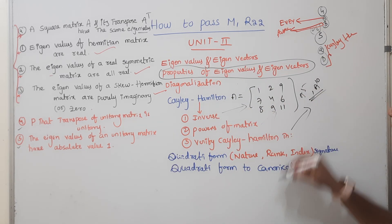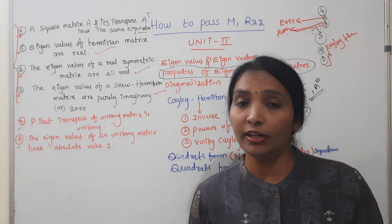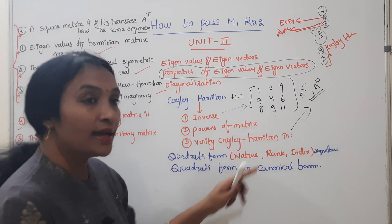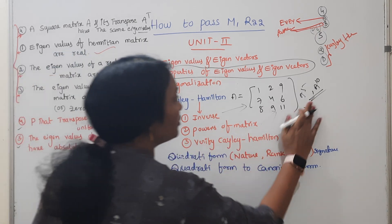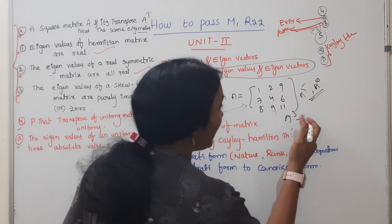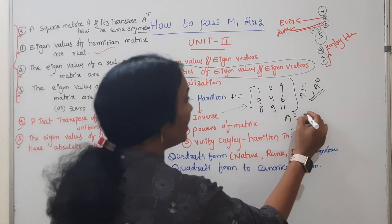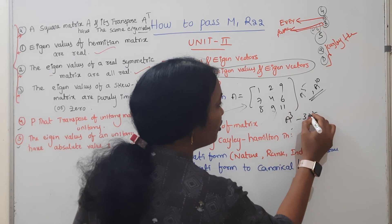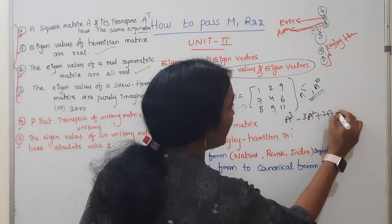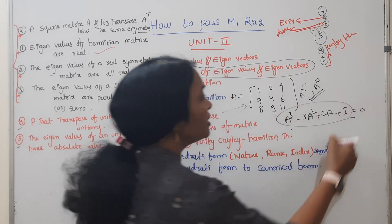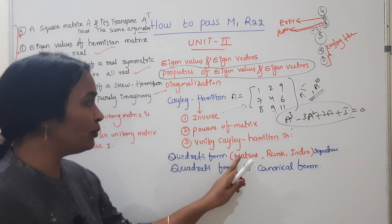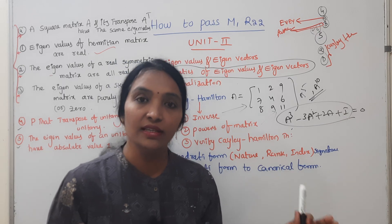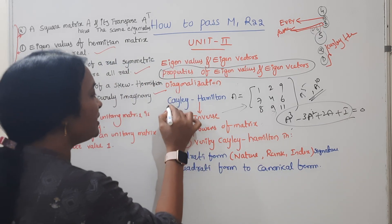And verify the Cayley-Hamilton. This is the matrix. We will have a characteristic equation: A cube minus 3 lambda squared — we replace lambda with A. So A cube minus 3A squared plus 2A plus I equals 0. This will satisfy. Then A cube, A squared, 2A — this will be 0, and it satisfies the Cayley-Hamilton theorem. This is the 3 types.